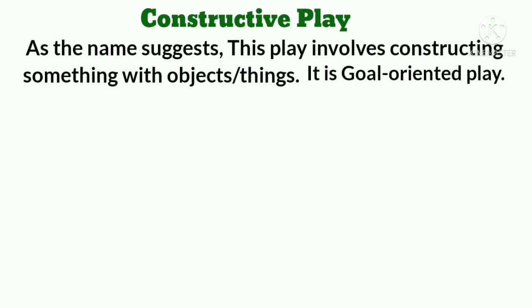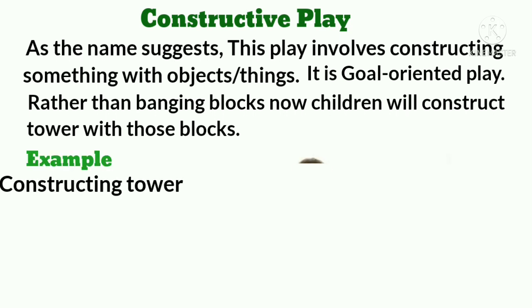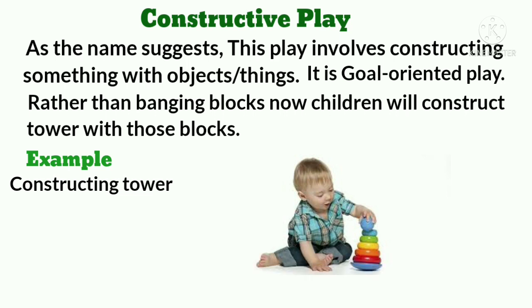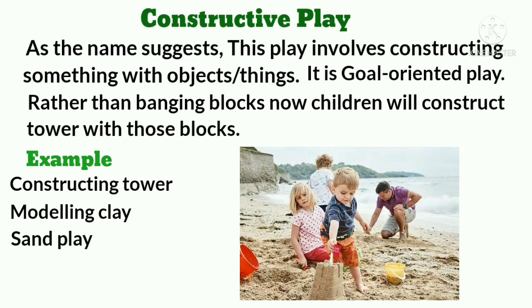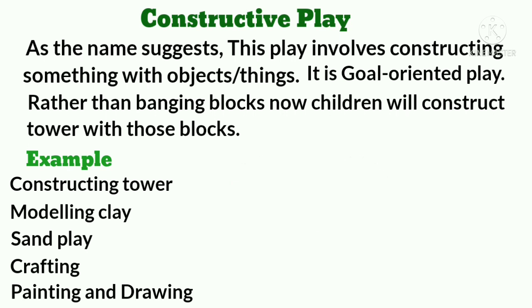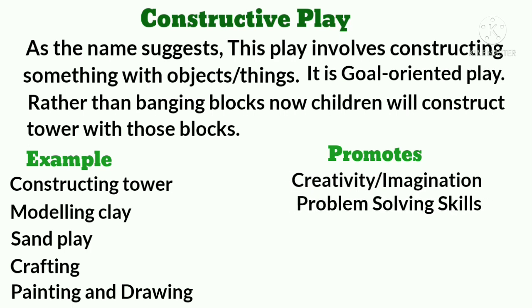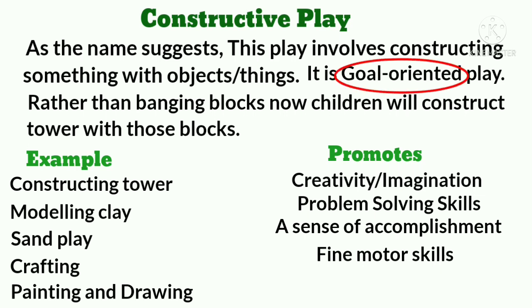The second type is constructive play. As the name suggests, this play involves constructing something with objects. Constructive play is goal-oriented — rather than banging blocks, the child will construct a tower with them. Examples include building with Legos and blocks, modeling clay, making towers with sand or a castle, crafting, drawing, and painting. It promotes creativity, problem solving, and a sense of accomplishment. Key words: goal-oriented and construct.